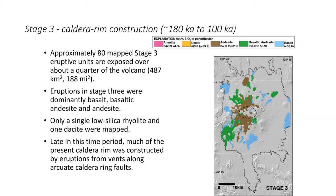Stage 3 — caldera rim construction — ran from 180,000 to 100,000 years ago. Approximately 80 mapped Stage 3 eruptive units are exposed. Eruptions were predominantly basalt, basaltic andesite, and andesite, with only a single low-silica rhyolite and dacite mapped. Late in this period, much of the present caldera rim was constructed by eruptions from vents along arcuate caldera ring faults.